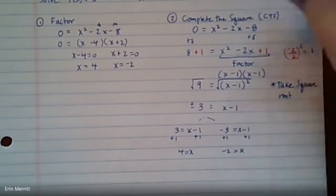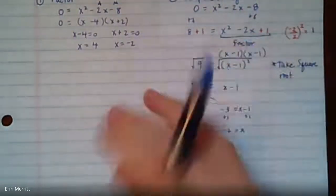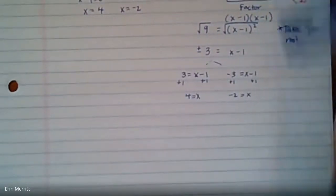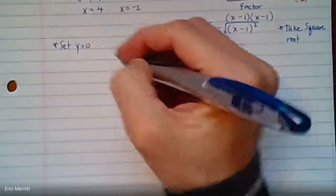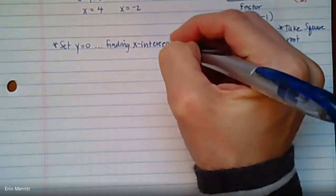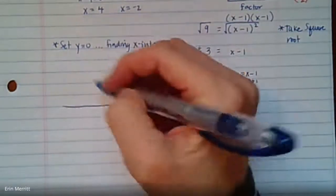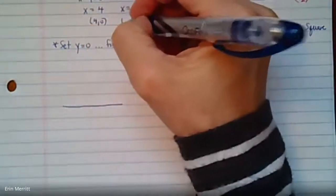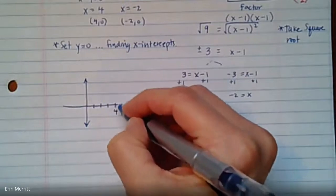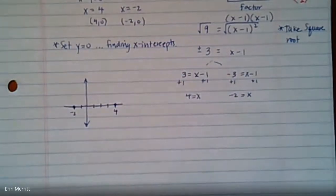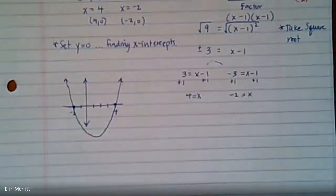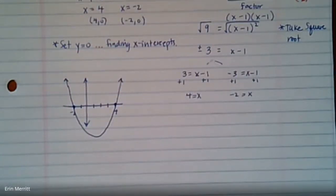What does this mean in terms of the actual parabola? Whenever we set y equal to 0, that's finding the x-intercepts. So if we graph this thing, this parabola is crossing at the point 4, 0 and negative 2, 0. Give yourself a little sketch here that we would cross at 1, 2, 3, 4 and then back at negative 2. The fact that it was positive means we know it'll open up, so it'll look something like this.